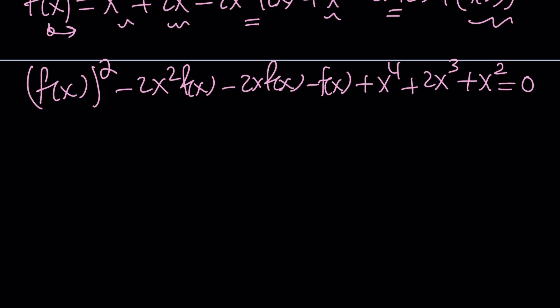So now we have something that equals zero. But what is this? Let's simplify this a little bit more. Let's go ahead and factor out an f of x here. f of x squared minus. Notice that if I take out a negative sign, then I get 2x squared plus 2x plus 1 as the coefficient of f of x, with a minus sign, right? Obviously.